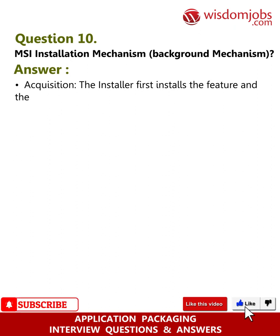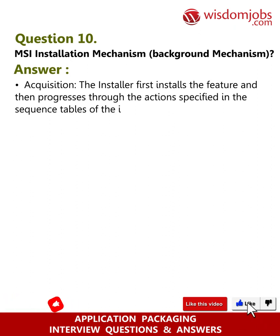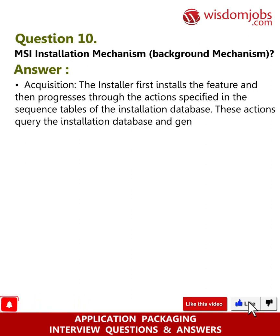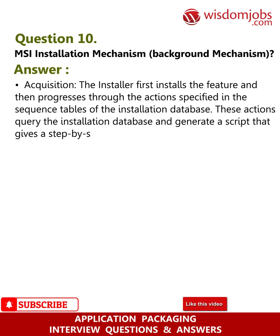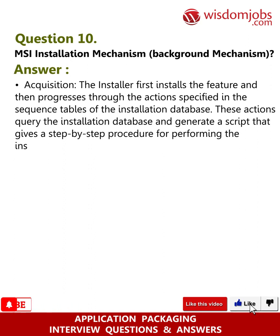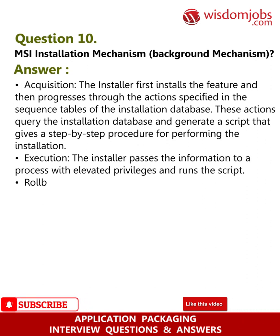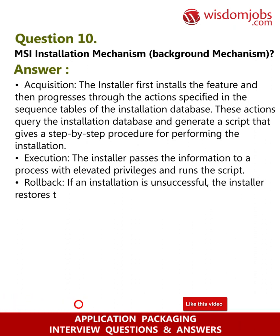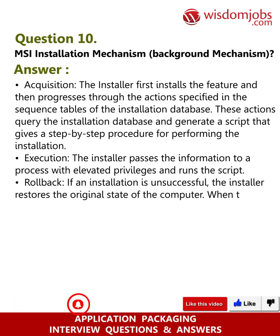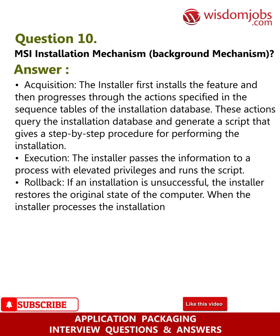Question 10: MSI installation mechanism — background mechanism. Answer: Acquisition: The installer first installs the feature and then progresses through the actions specified in the sequence tables of the installation database. These actions query the installation database and generate a script that gives a step-by-step procedure for performing the installation. Execution: The installer passes the information to a process with elevated privileges and runs the script. Rollback: If an installation is unsuccessful, the installer restores the original state of the computer.